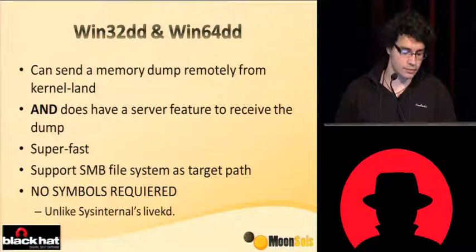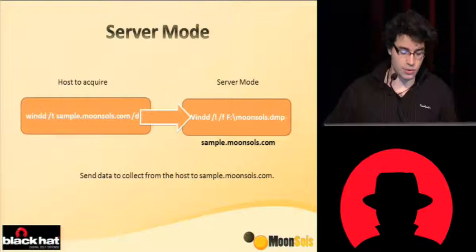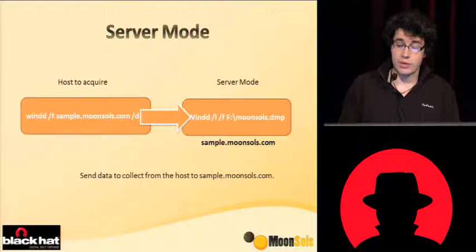If you want to use WinDD to send the Microsoft crash dump remotely, it's really easy. You just type the following command: specify the address of the remote server with the slash-d switch, which means you want a Microsoft crash dump. That's all you have to do — a simple command to do a very complex job.